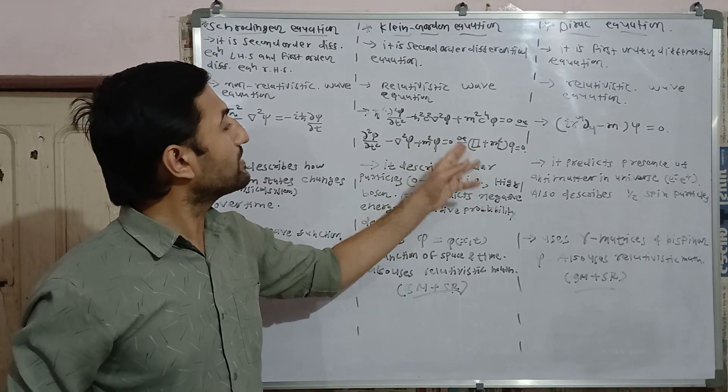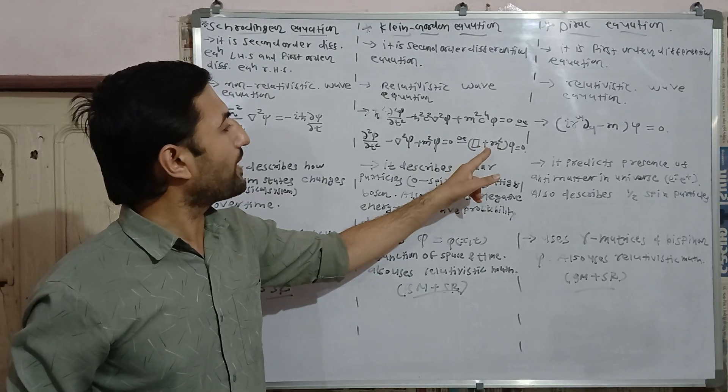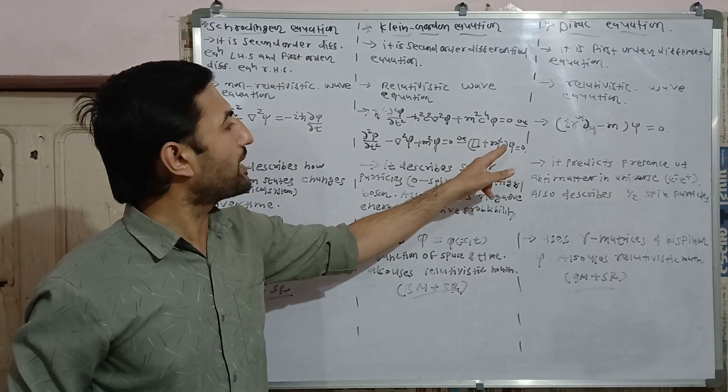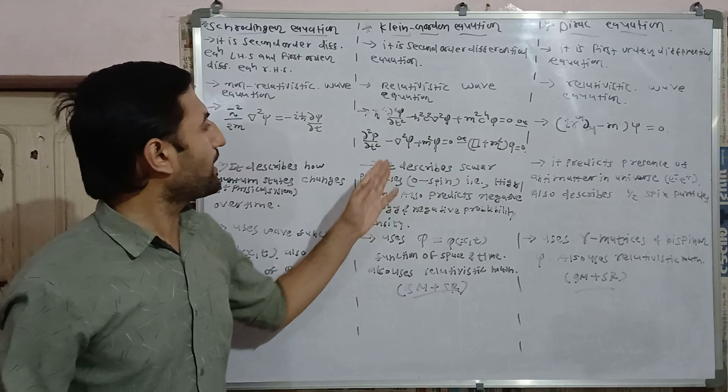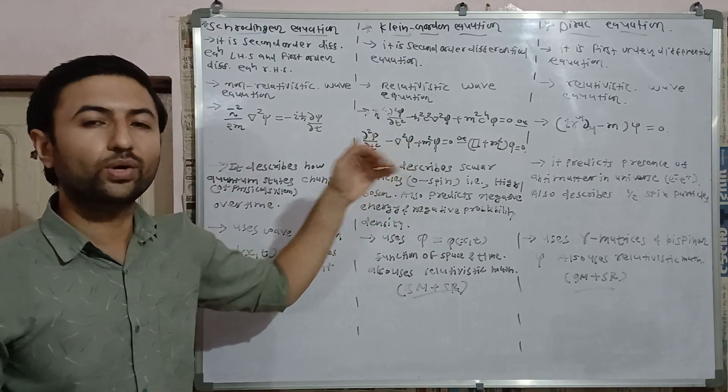Third form is by considering the d'Alembertian operator, that is box squared plus m squared bracket closes into phi equals zero. Here we have considered h-bar equals c equals 1 by considering natural units.